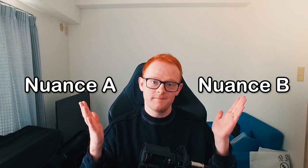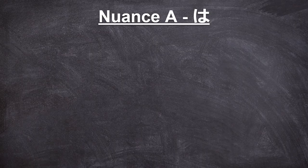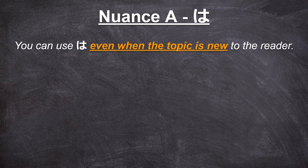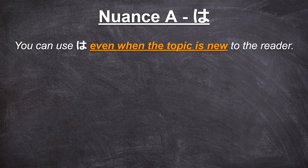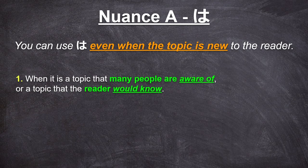So that was the basic usages of は and が with example sentences. But we're not done. In addition to the basic usages, there are two main nuances when using が and は. To make it easy, we'll name them Nuance A and Nuance B. First is Nuance A: you can use は even when the topic is new to the reader. Japanese is full of nuances! So when can you do this? One: when it is a topic that many people are aware of, or a topic that the reader would know.